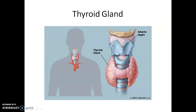Hypothyroidism during pregnancy causes defective development and maturation of the growing baby, leading to stunted growth — that is cretinism — mental retardation, low intelligence quotient, abnormal skin, and deaf mutism.